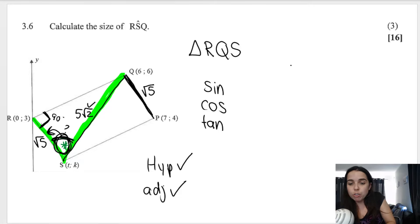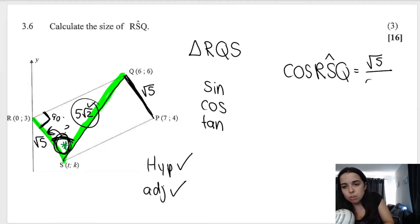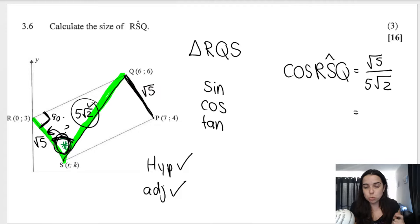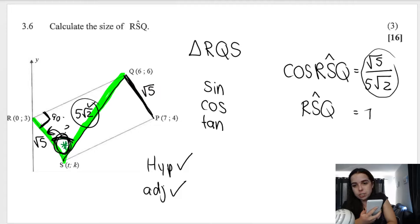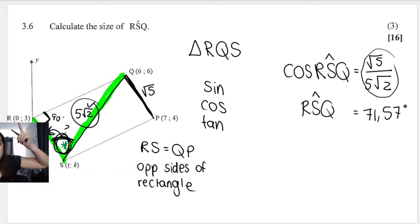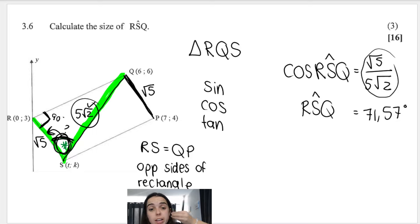When you're looking for an angle in trig, that's when you press shift. So shift cos, then type in that fraction. I therefore get angle RSQ equals 71.57 degrees. Note that RS here equals QP — they're equal because they're opposite sides of a rectangle.